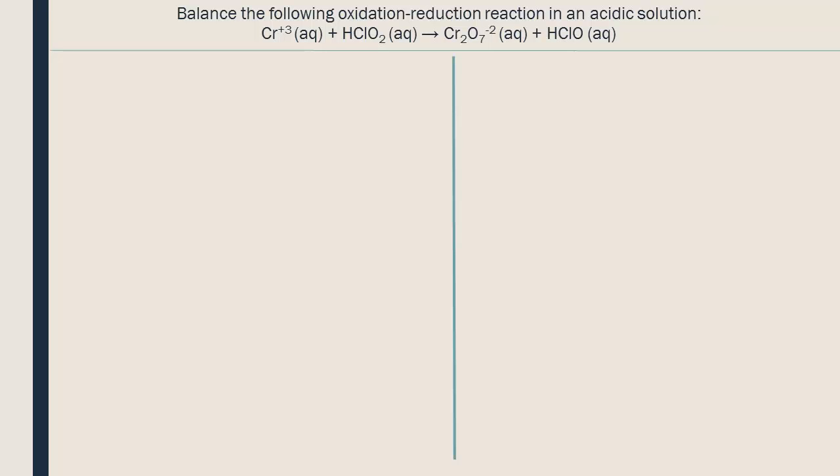We start by separating the equation into its two half-reactions. The chromium is oxidized from positive 3 to positive 6, while the chlorine is reduced from an oxidation state of positive 3 to positive 1. Generally, we can simply pair the reactants with the product containing the same elements, excluding hydrogen and oxygen. So here, the reactant containing the chromium will go with the product that also has chromium in it to form one of the half-reactions. The other reactant and product will form the second reaction.